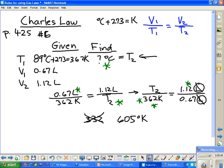Okay, that answer 605 is correct, but it's not the answer that the book wants. They want to take that 605 and subtract 273 and get that back into degrees Celsius. Okay, and that would be 2 and 2 and 3 and 3. So 332 degrees Celsius would be our final answer.